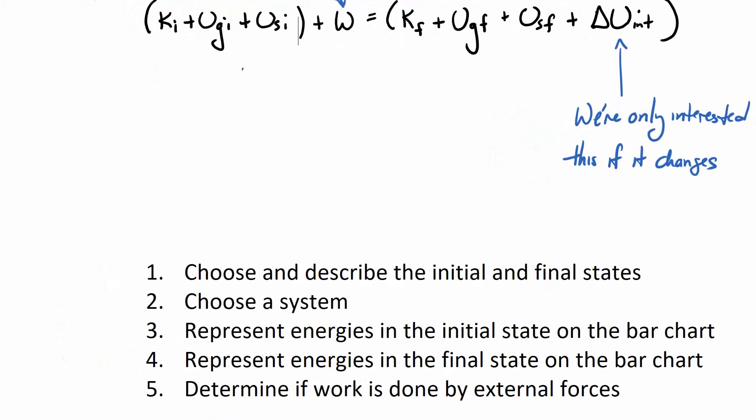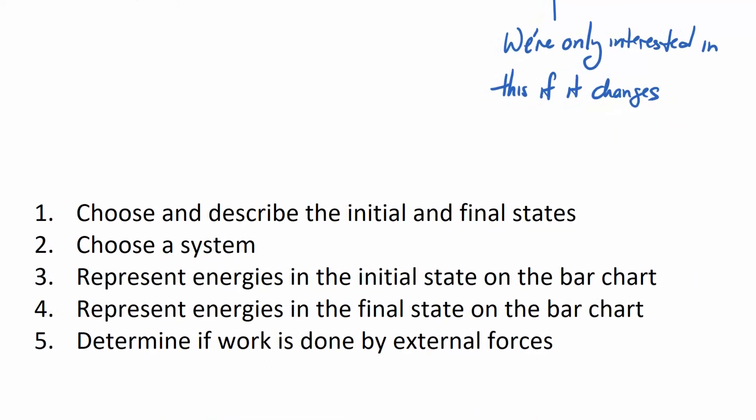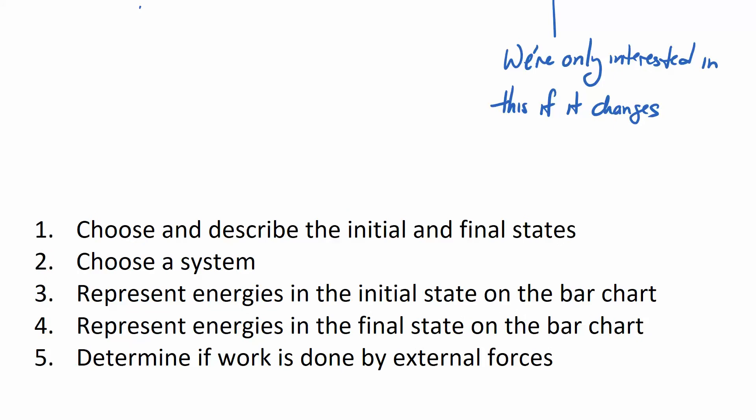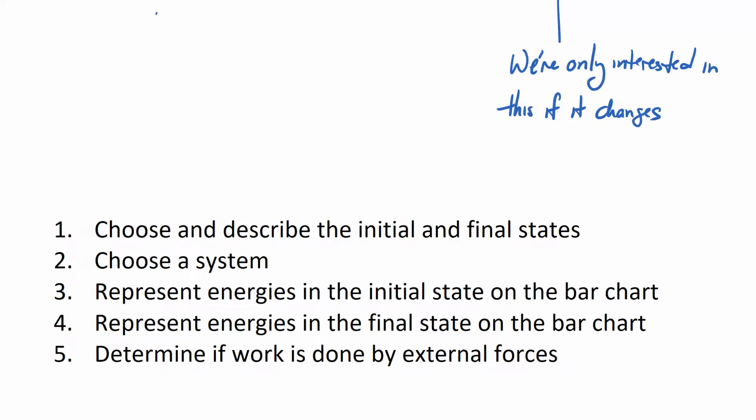Now you might wonder, how are we going to turn this into a homework set? Good question. We're going to often, we're going to talk about now kind of how to qualitatively represent data about energy. So we're not going to worry about specific values of it, but just is energy present and how do we represent it. So this is kind of the procedure we're going to have. We're going to choose and describe the initial and final states of a system. We're going, initial states of our process, rather. We're going to choose a system. That's going to dictate kind of what energy we have. We're going to represent energies in the initial state on a bar chart. We're going to represent energies in the final state on a bar chart, and then we're going to determine if work is done by external forces.